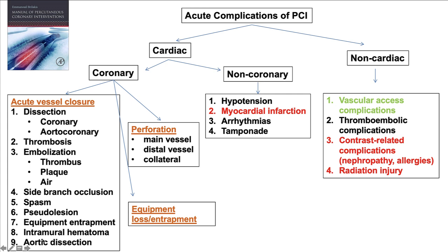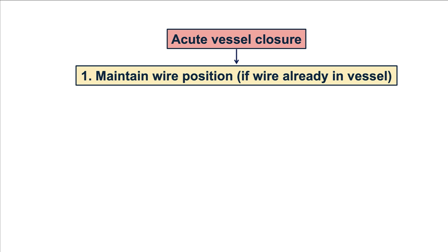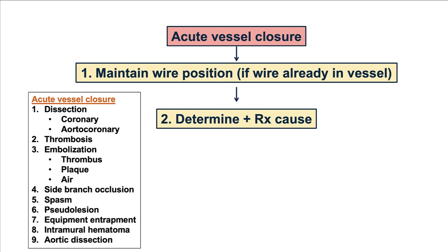All these causes are described in detail in the book and will be presented in this video briefly and in subsequent videos as well. Overall, if there is acute vessel closure, the priorities are: number one, to maintain wire position, assuming that a wire had been placed in the coronary vessel prior to the occurrence of the acute vessel closure. The second priority is to determine the cause, because the treatment can be diametrically opposite.